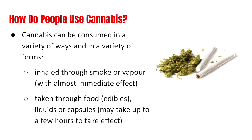How do people use cannabis? Cannabis can be consumed in a variety of ways and forms. Most of the time it's inhaled through some kind of cigarette or joint, which gives immediate effects. Sometimes it's taken through food in the form of edibles, or as liquids or capsules, and these usually take a little bit longer to take effect.